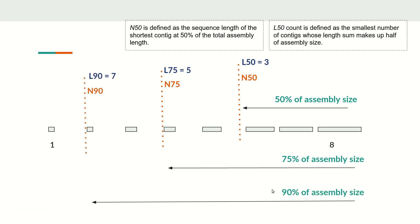For N90, seven contigs together form 90 percent of the assembly size, and N90 is the length of that seventh contig — even shorter than N75. So from N1 to N100, the graph always trends downward, which is why in tools like QUAST the plot starts high and decreases: the N value keeps decreasing because we arrange contigs from short to long.